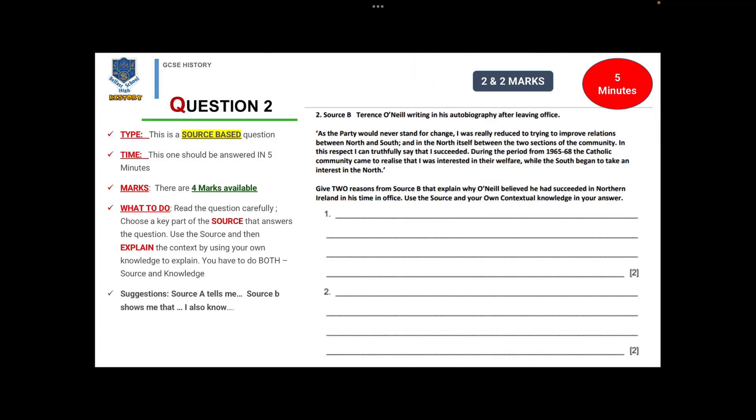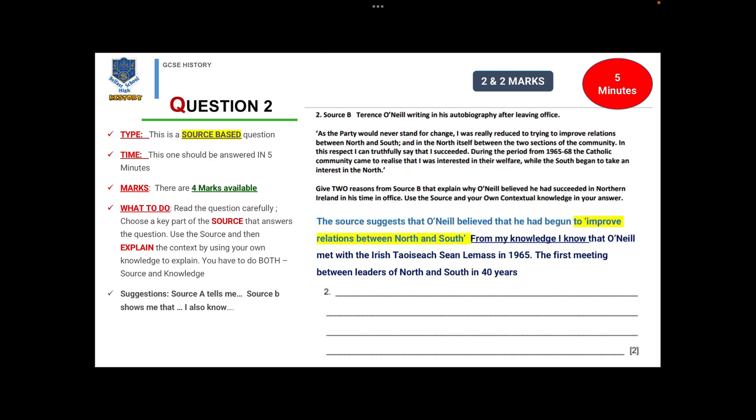The next type of question is Question 2. Again it's source-based and should be answered in about five minutes. There's four marks available, a two and a two. Read the question very carefully, annotate if you can, underline where you can, choose a key part of the source that answers the question, and then explain the context using your own knowledge. You have to do both to get the marks.